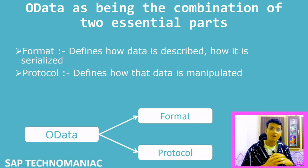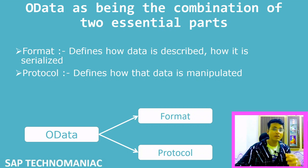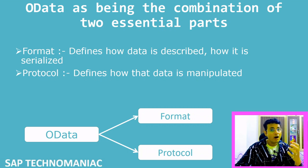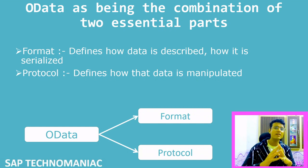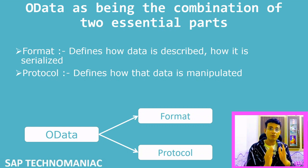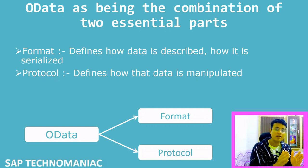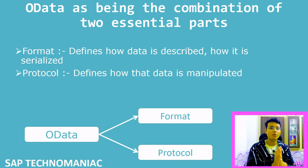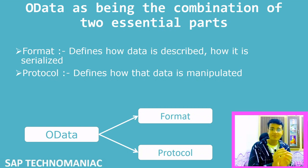The second part is the protocol. Protocol means we want to not only display the data, but also get it, update it, and delete it. Before doing those modifications, we have to set some rules — a protocol — which should be followed. So OData is divided into two essential parts: one is the format, and second is the protocol.